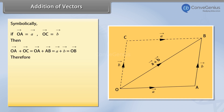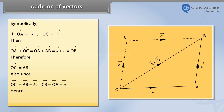Therefore, vector OC equals vector AB. Also, since vector OC is equal to vector AB, which equals vector B, vector CB is equal to vector OA, which equals vector A. Hence, vector OC plus vector CB equals vector OB.